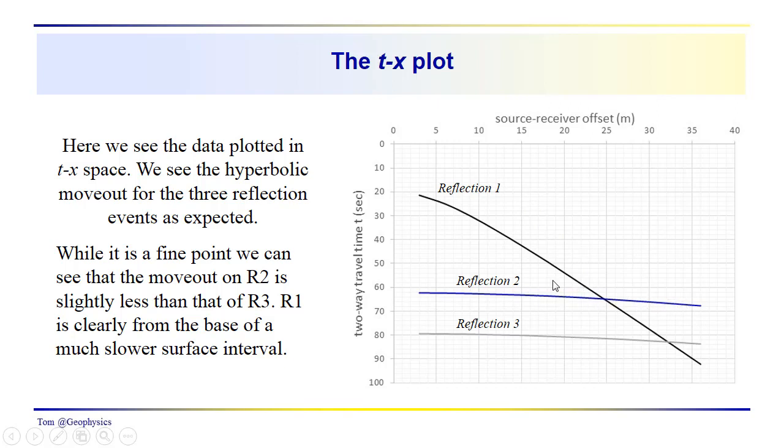Or the RMS velocity, or the NMO velocity for down to reflector two and reflector three. These have smaller slopes, larger velocities.